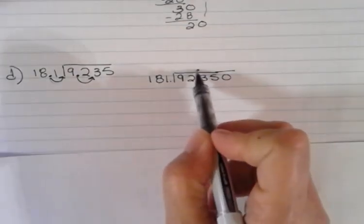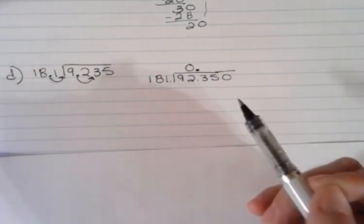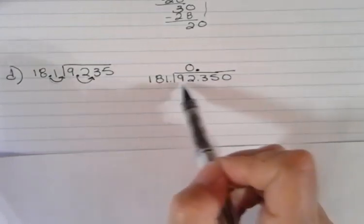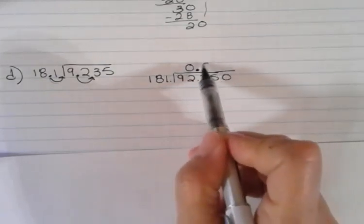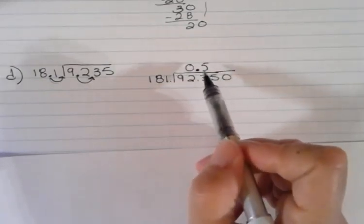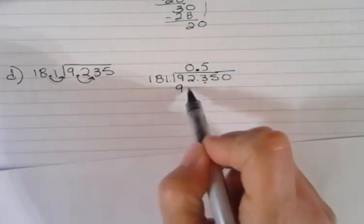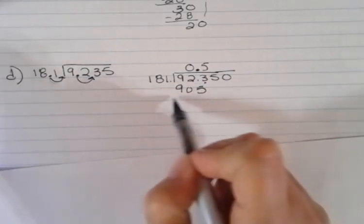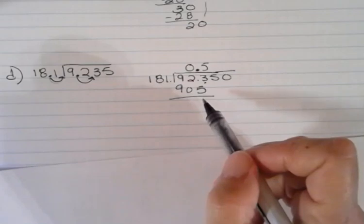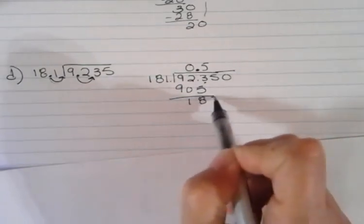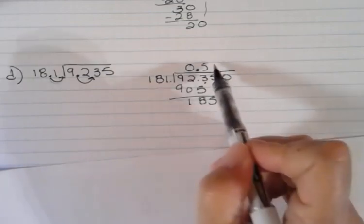Now I'm going to go through this. 181 doesn't go into 92, so I definitely have a zero there. 181 goes into 923 five times. Five times 181, I did that earlier. Use your calculator to check this. There's no reason that you're doing all kinds of long calculations here. I get 905. When I subtract that, I get 185.